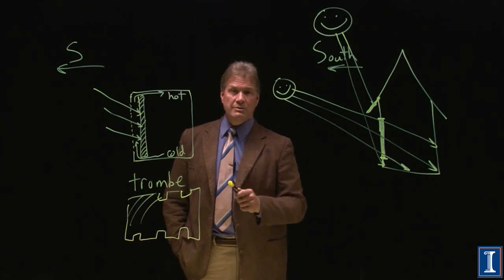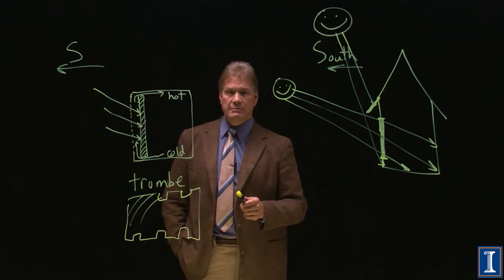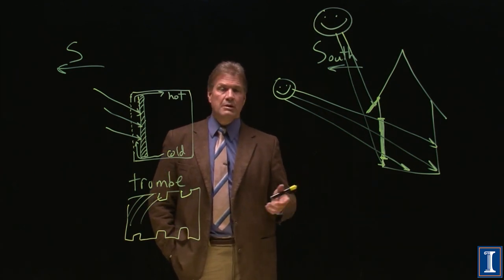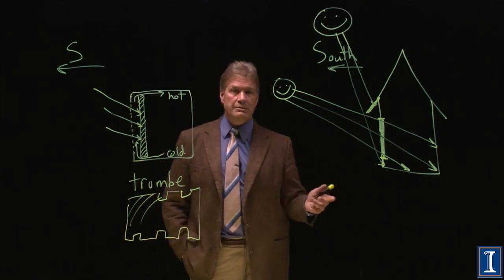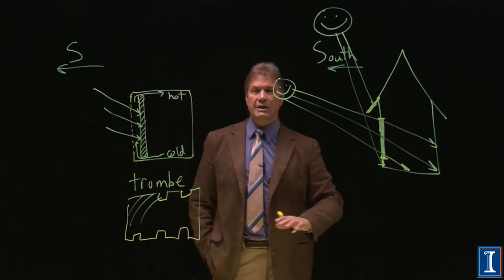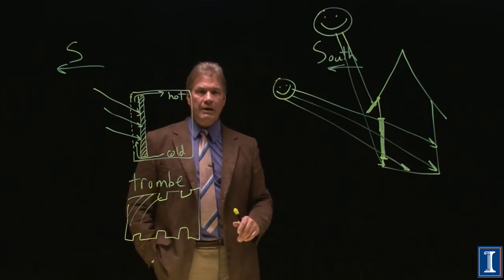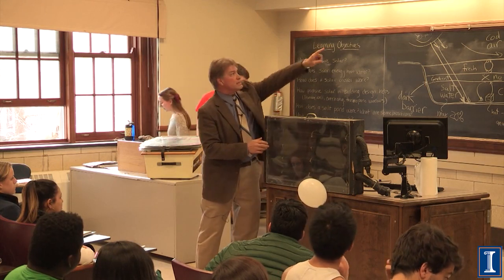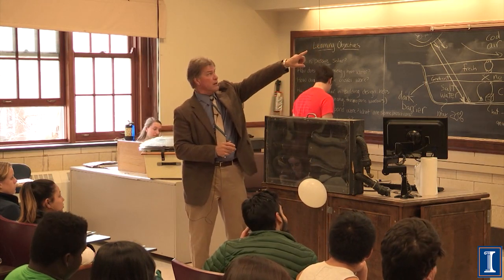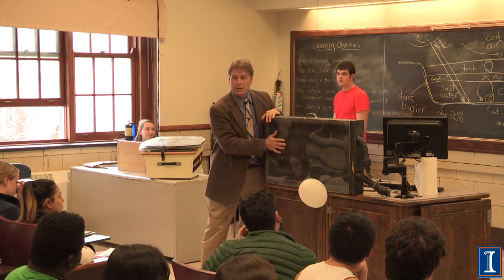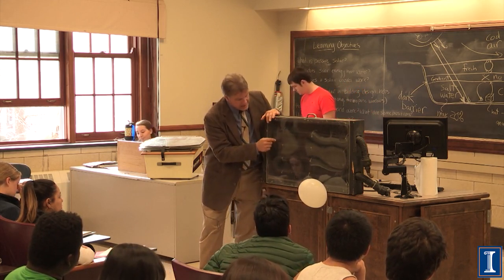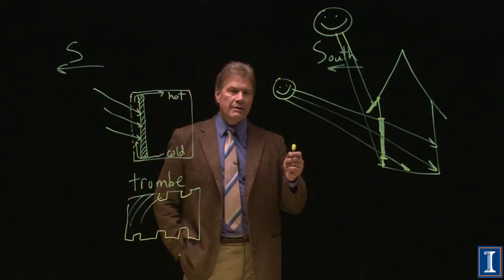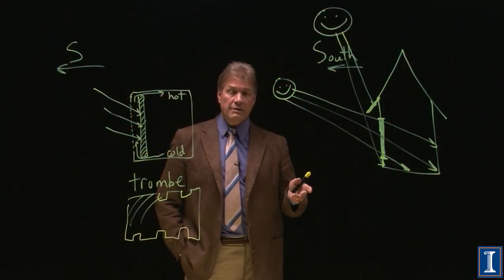You can make a solar collector very easily. You can just take, say, some plywood, put some black tubing in it, put some plexiglass or glass on the top. Just like this example. Here's the idea. You put this on your roof, and the sunlight comes through the plastic and it heats up those black pipes inside that have water going in it. If you want to get a little more sophisticated, you can purchase them.